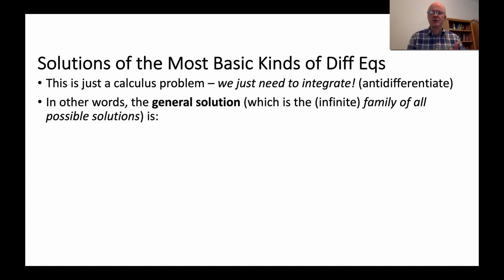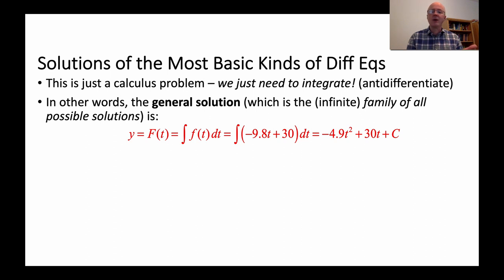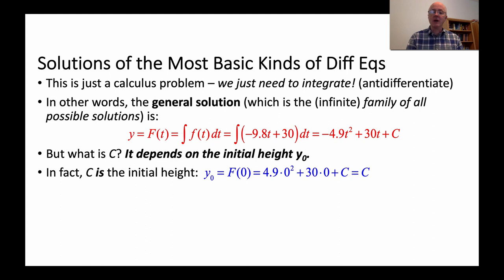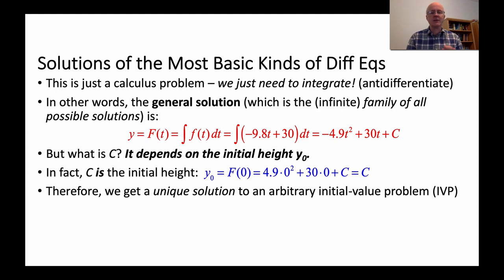The general solution — an infinite family of solutions — is found by integrating: -4.9t² + 30t + c, where c is arbitrary. Any value of c solves the differential equation. Once you know the initial height, c is determined. In this example, c actually equals the initial height y₀, because plugging in t = 0 gives c directly since 0 squared and 30 times 0 are both 0. Thinking of y₀ as fixed, we get a unique solution to an initial value problem.